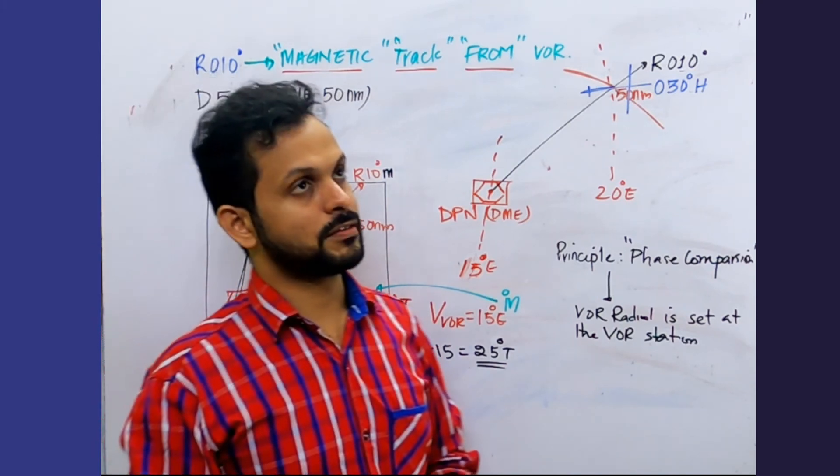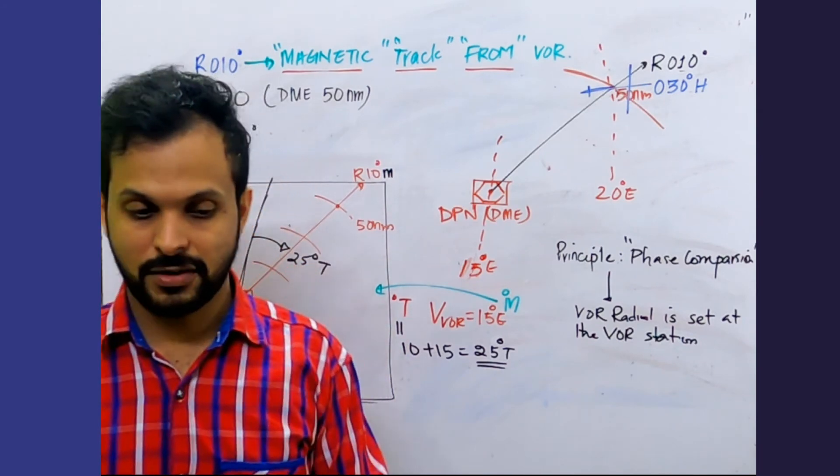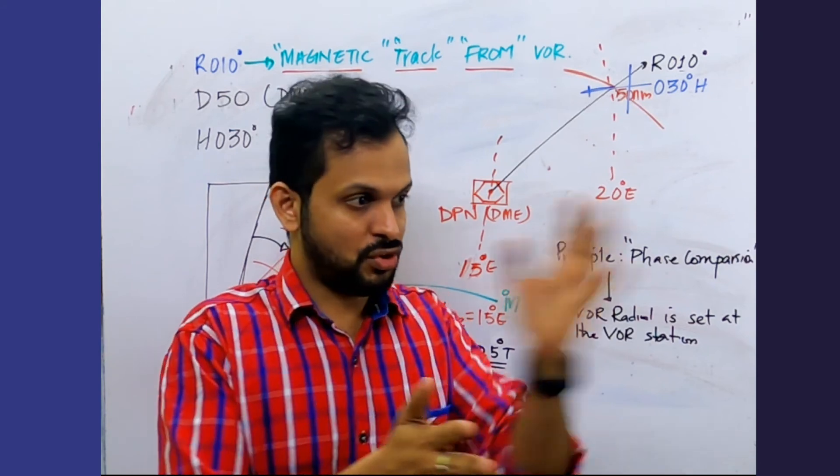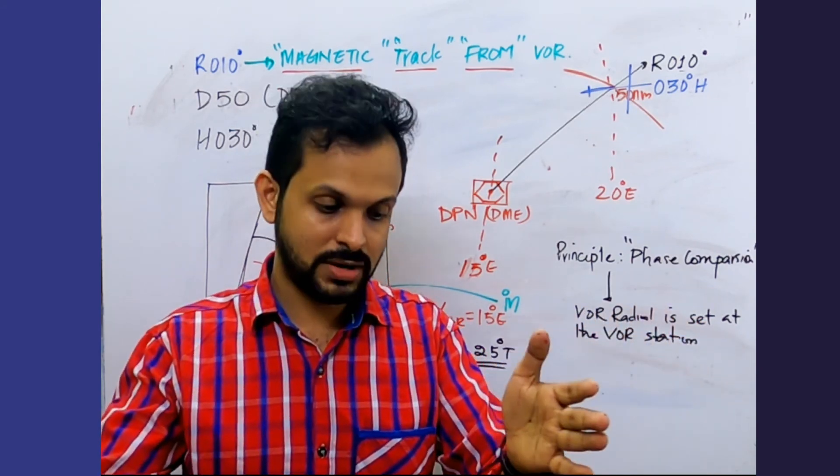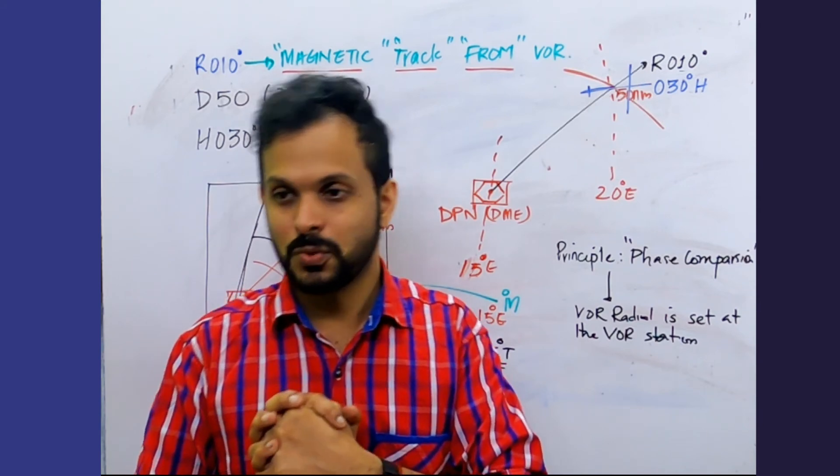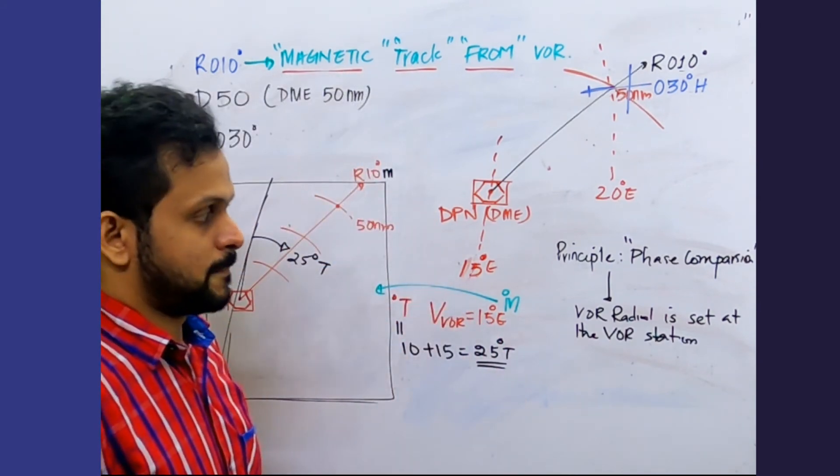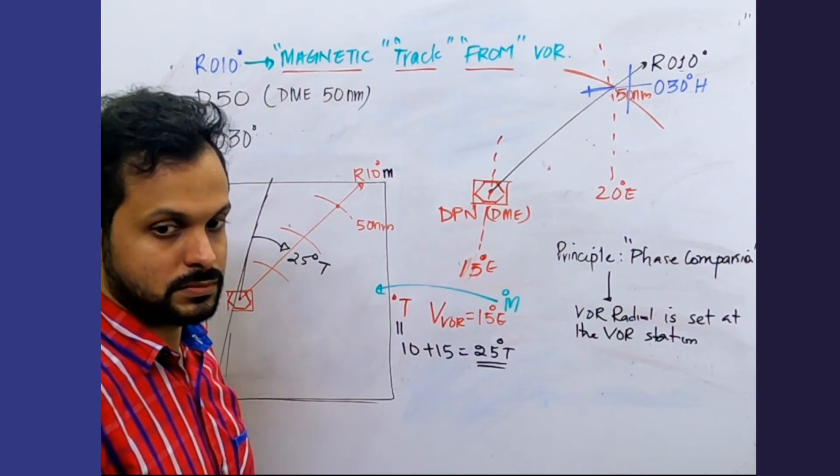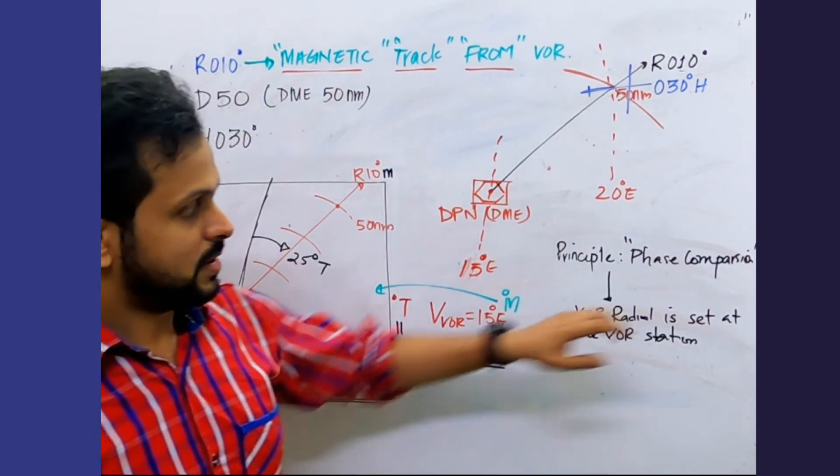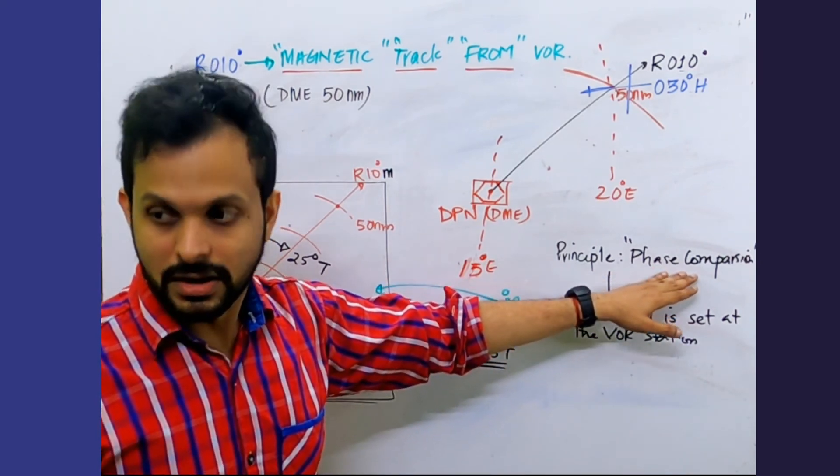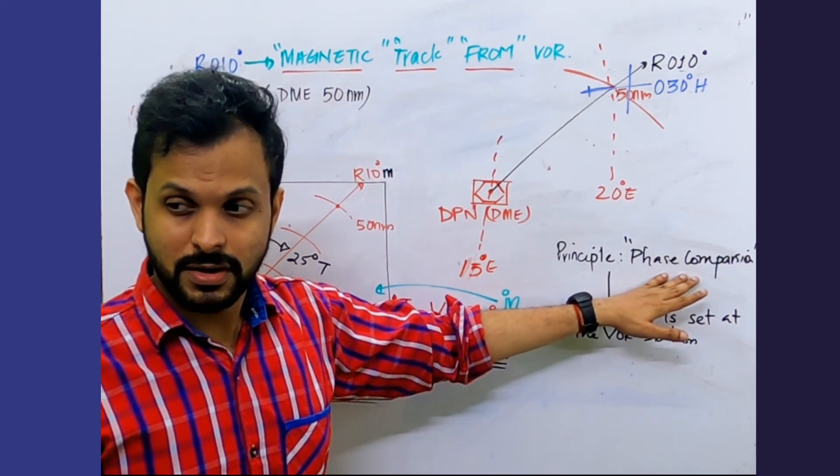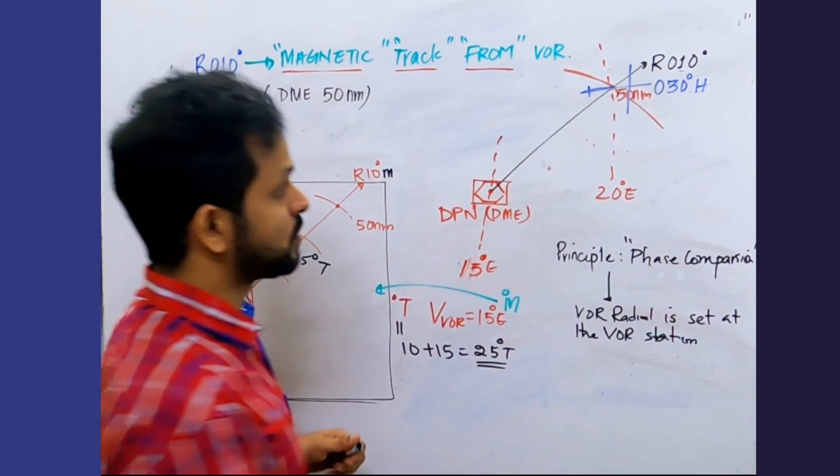What we will do next is we will do a problem where we have a combination of VOR and NDB systems coming together. So we have an aircraft in the center, you have a VOR to its left, NDB to its right, and then we will see how that question takes us through.